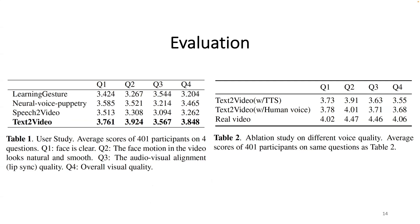To evaluate the generated video quality, we conducted a human subject test with 401 participants on four questions: first, whether the face in the video is clear; second, whether the face motion looks natural and smooth; third, the audio-visual alignment quality; and fourth, the overall visual quality of the video. We compared our results with state-of-the-art approaches including Learning Gesture, Neural Voice Puppetry, and Speech-to-Video. Since these three methods are audio-based and use the real human voice in their demo video, we also use the real human voice for comparison. Our method has the best overall quality score compared to the other three SOTA methods, as Table 1 shows.